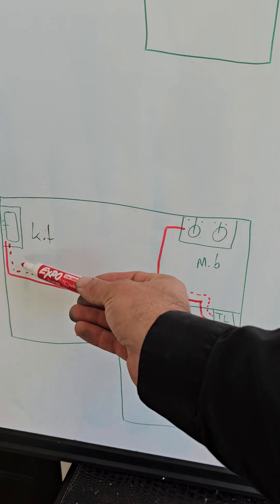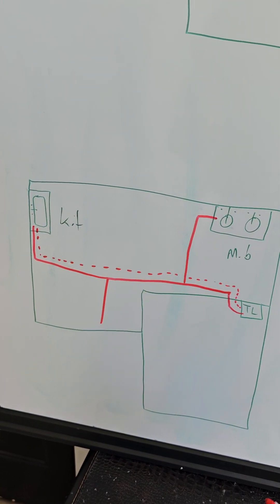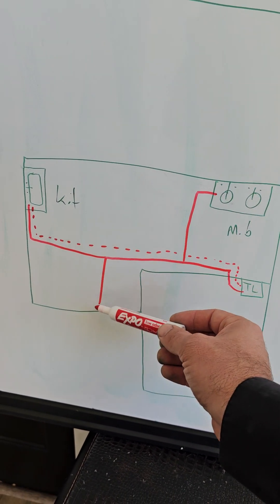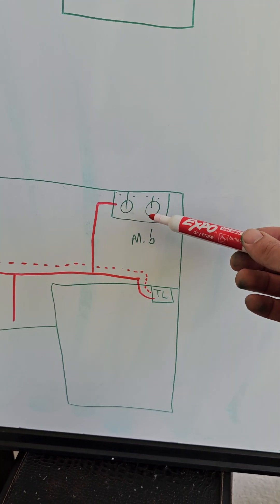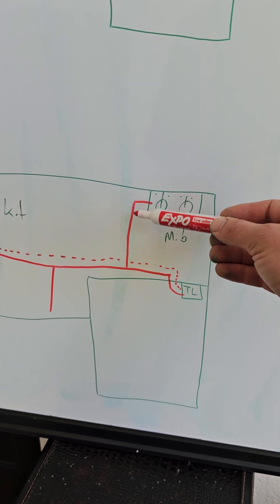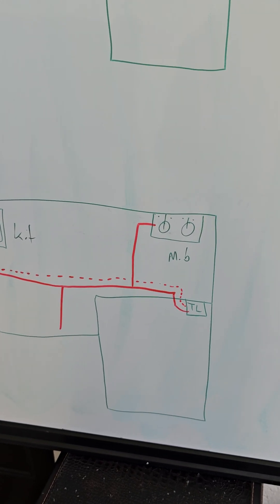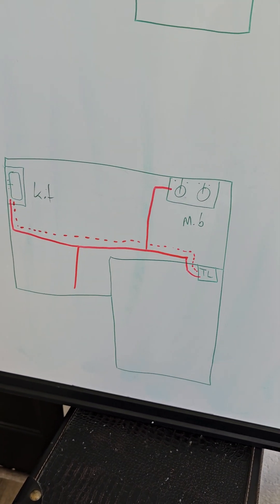But the way I drew it here is the most ideal situation where you pick the farthest location, in this case the kitchen, and that gets the hot water instantly. And then all of the other utility rooms, other bathrooms, they only have to bleed maybe 10, 20 feet of line before it gets hot.